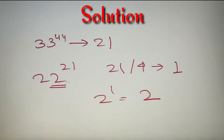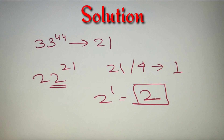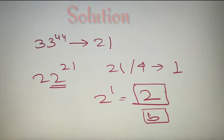So the answer is 2 raised to the power 1, which equals 2. Therefore, the unit digit of 22 raised to the power 33 raised to the power 44 is equal to 2, which corresponds to option B. The final answer is option B: 2.